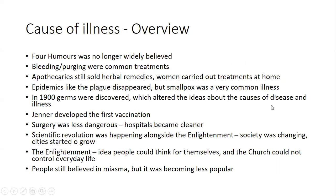We need to understand first the cause of illness. An overview at the start of this unit: the years 1700 to 1900 were all about the Industrial Revolution, so Britain were significantly ahead of the majority of countries at this time. In medical terms, the four humours was no longer widely believed — we talked about that at the back end of the Renaissance, about how that was being questioned. Bleeding and purging were common treatments still being used. Apothecaries did still sell herbal remedies. Things like the plague did disappear, but it was replaced with new illnesses which became very common with epidemics, such as smallpox.